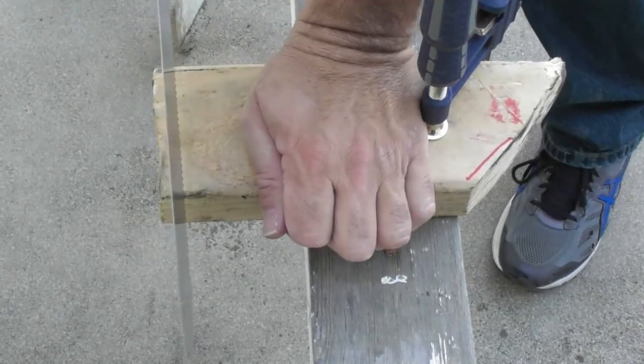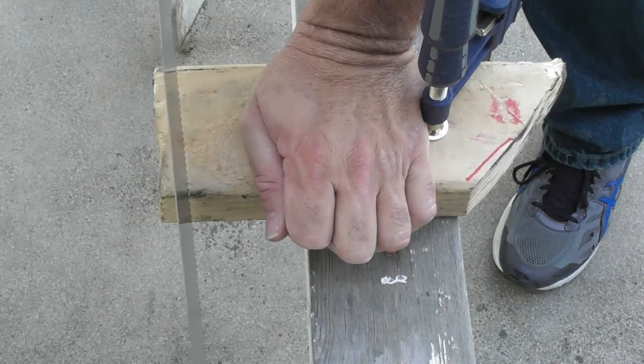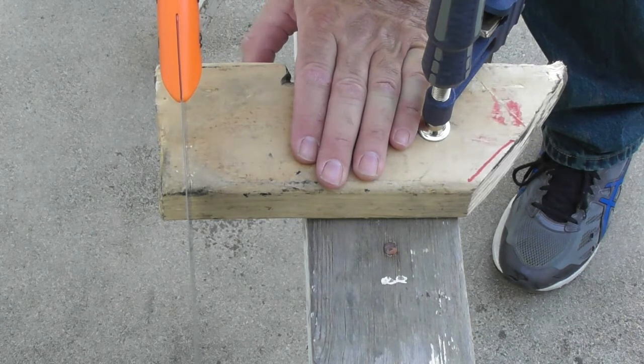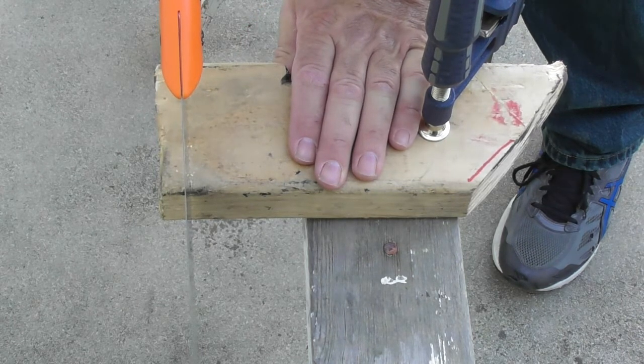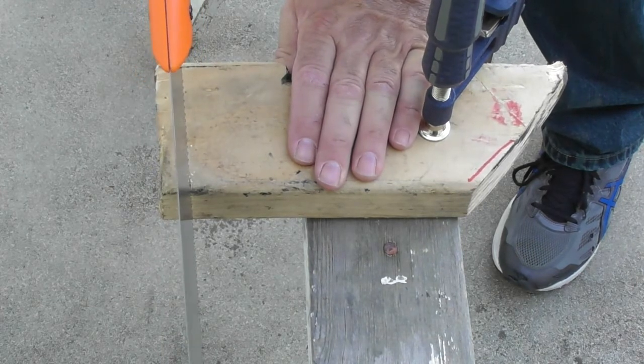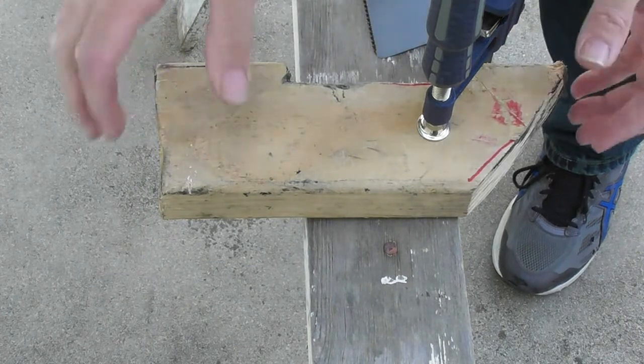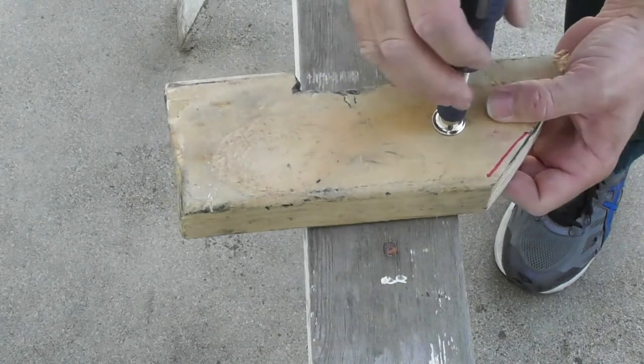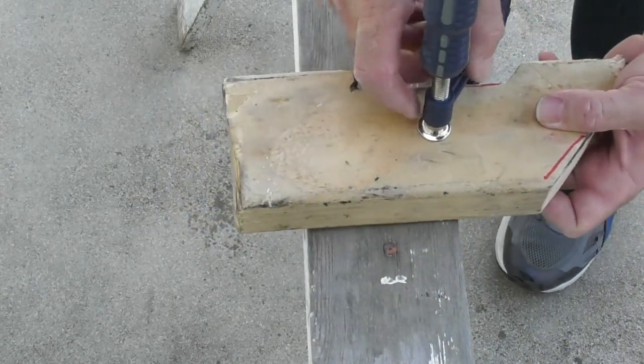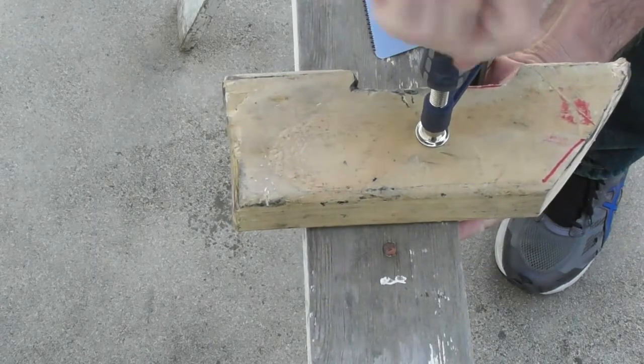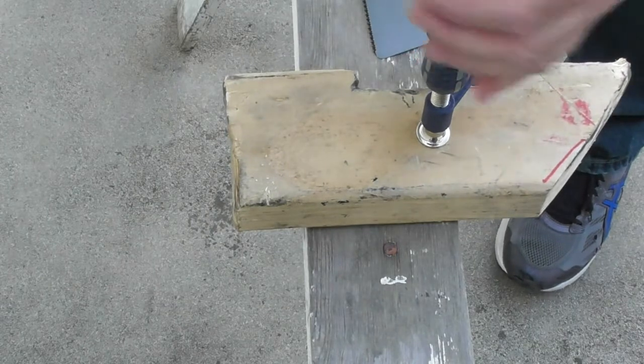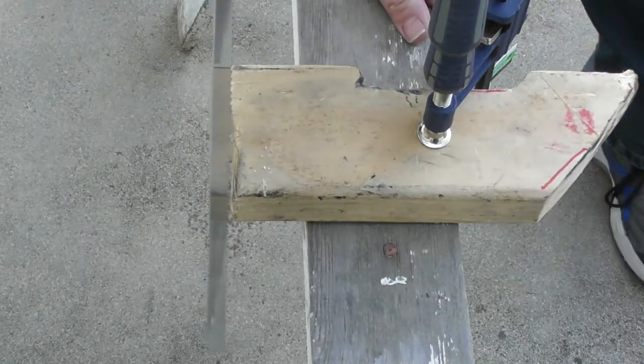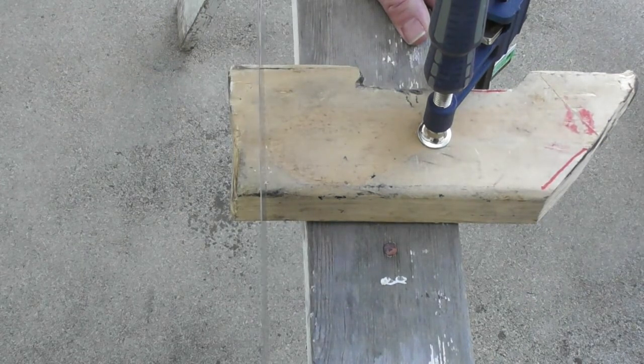Here we go. My first time using a pull saw. So normally it would cut on this way, this direction, on a standard saw. But on a pull saw, it cuts on the pull. So it seems to be digging into the wood much easier than most saws. I'm going to secure this a little better. And it already looks like it's cutting on an angle.